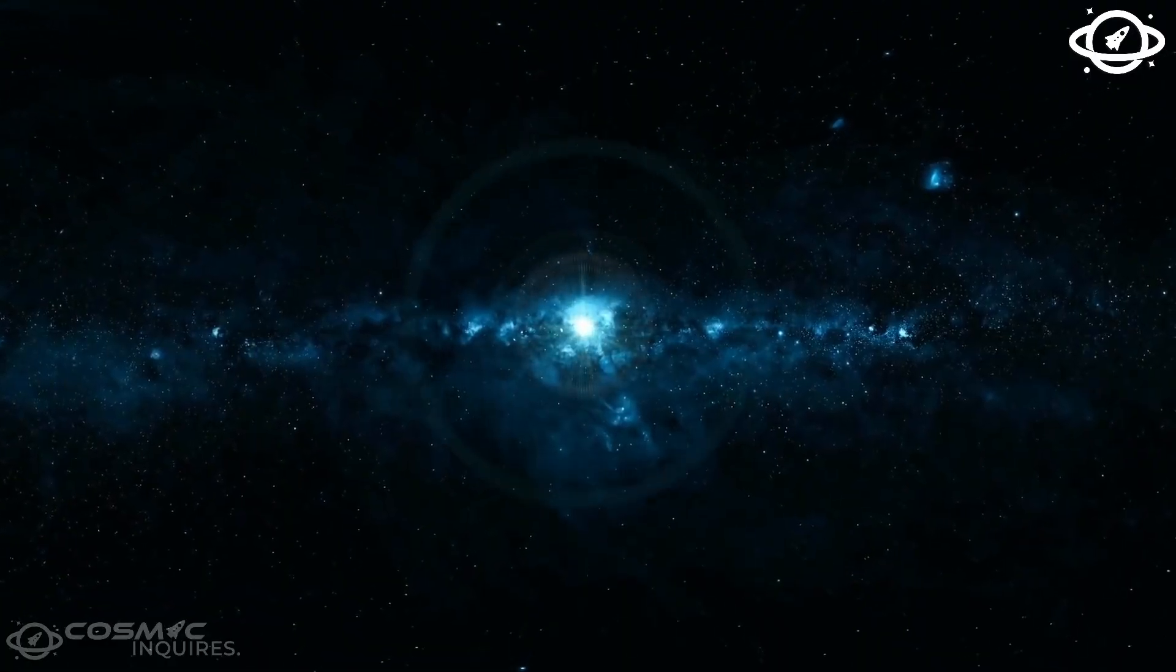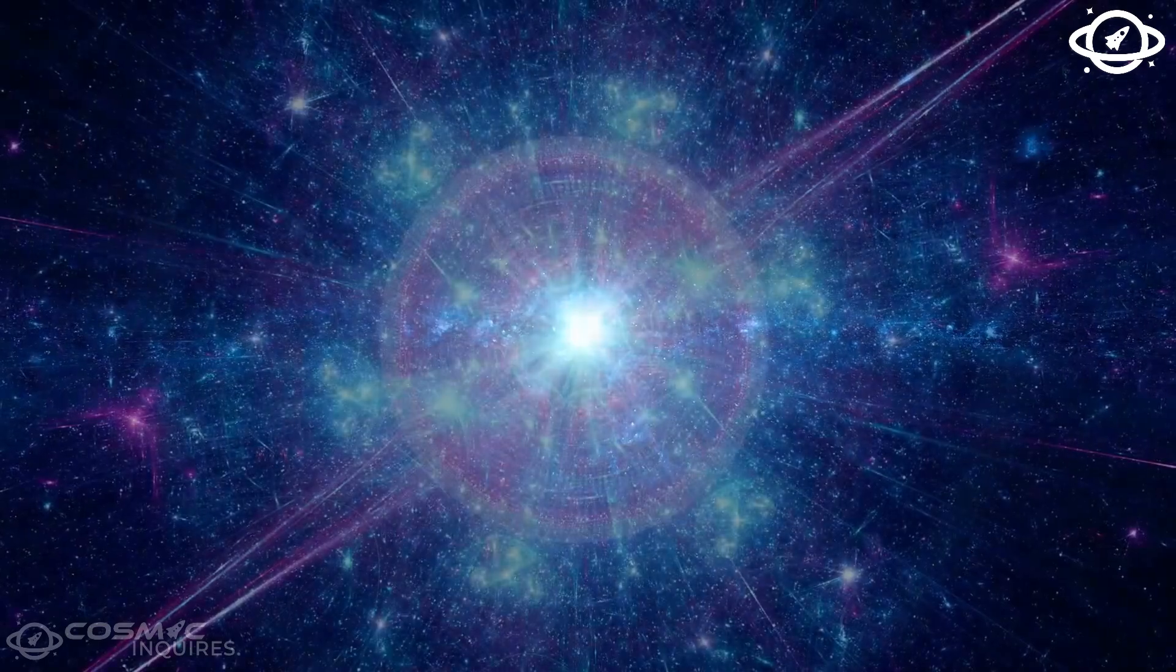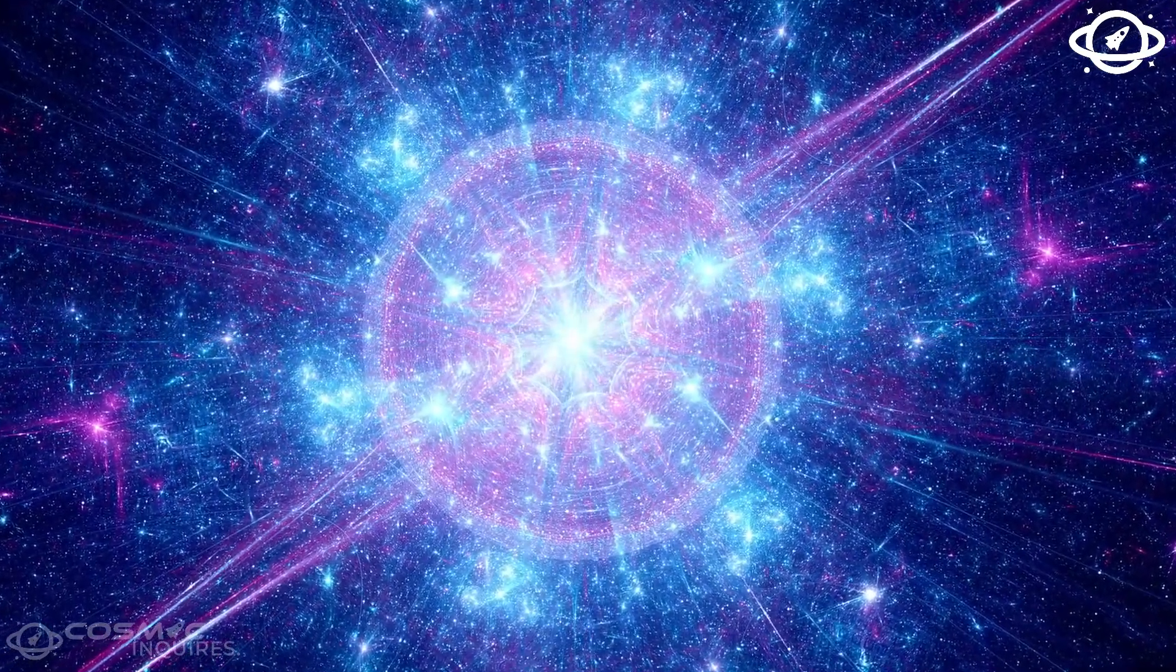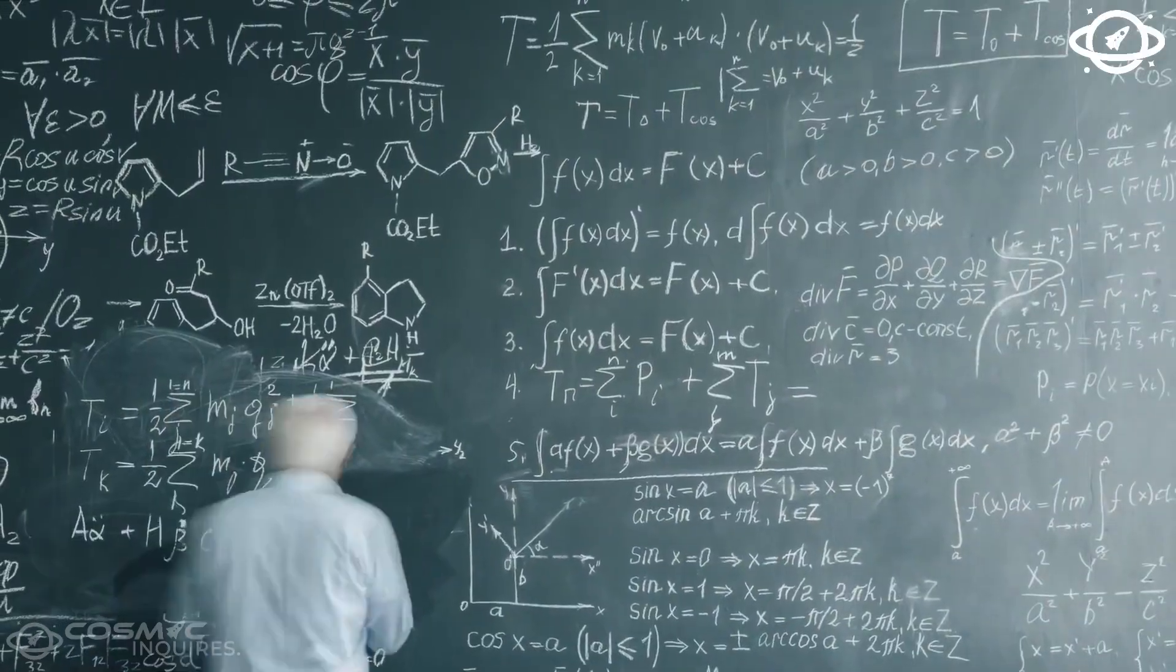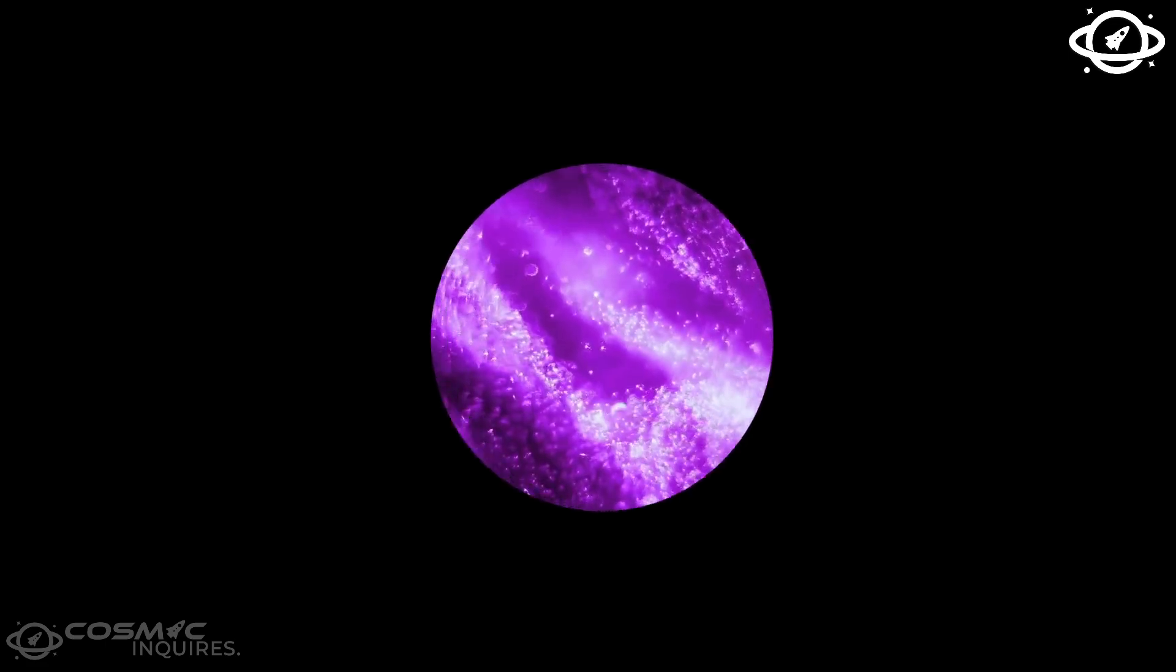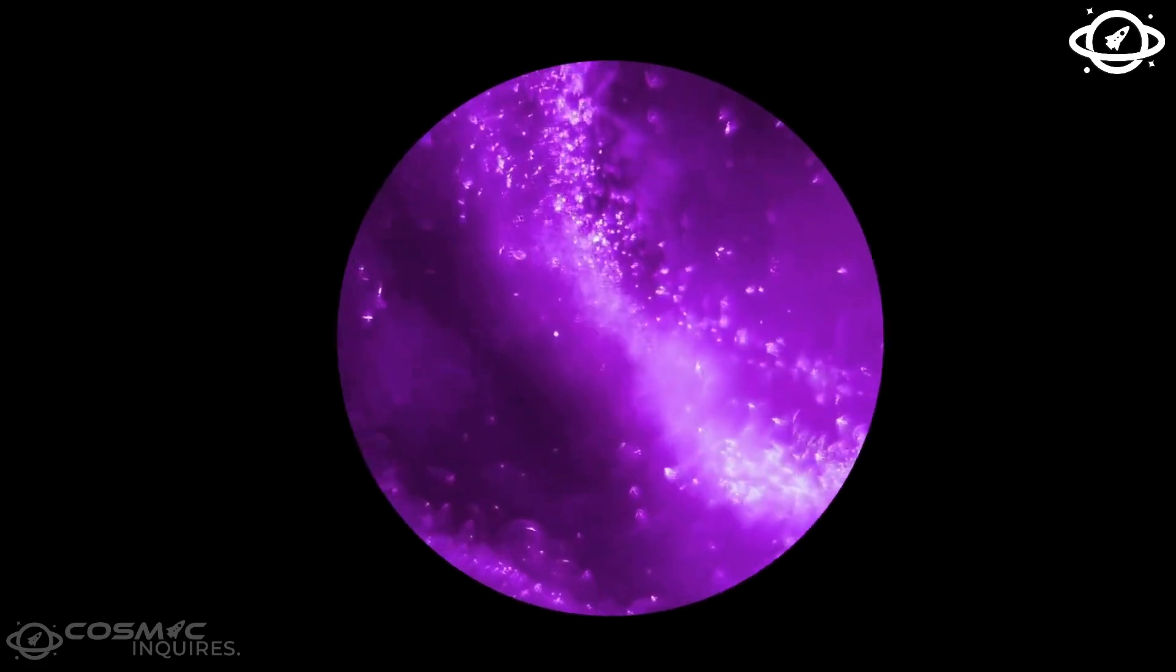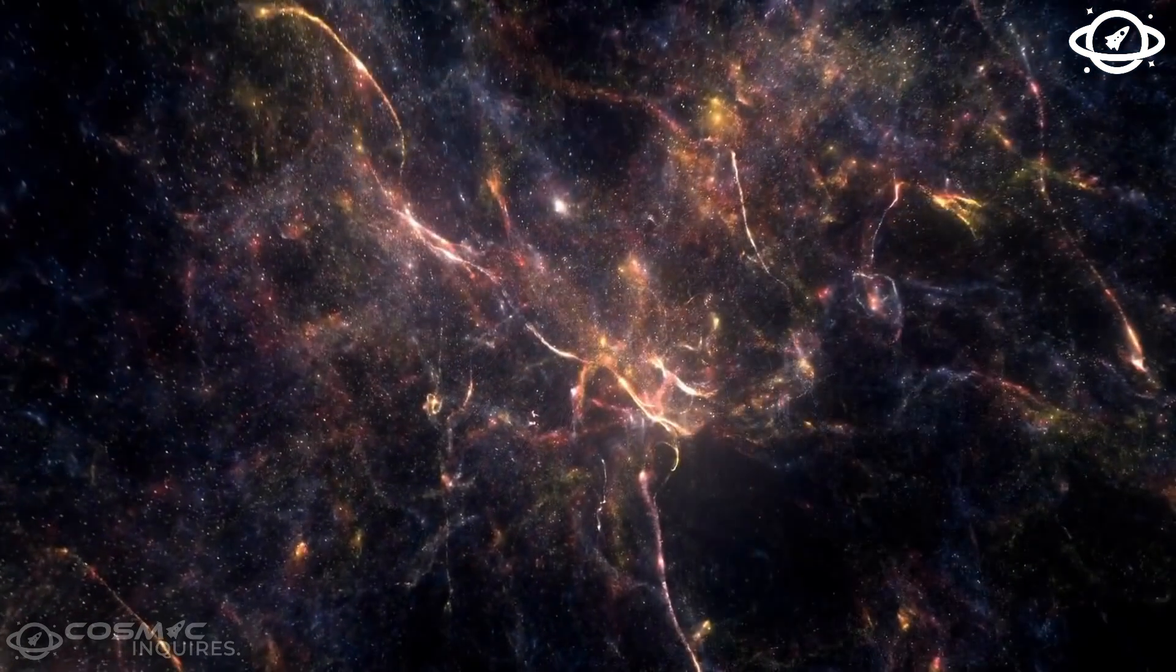That means that light has only had 13.8 billion years to travel from the bit that we can see to our eye. We can only see as far as light has had time to travel. But we think there's a lot beyond that because of measurements we've made of how the universe is curved and what the structure of the universe is. It undoubtedly extends beyond the little bubble that we can see. How far it extends is another great question. We don't know, but it could be infinite in extent.